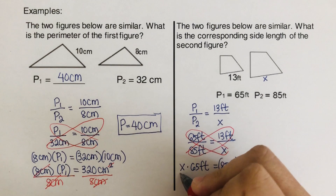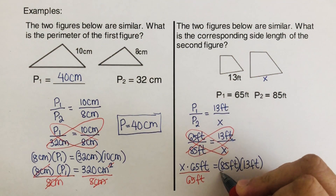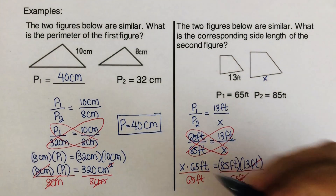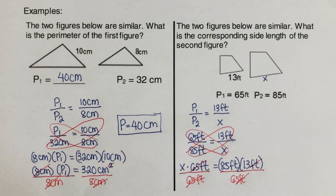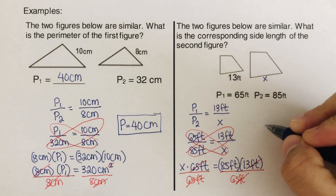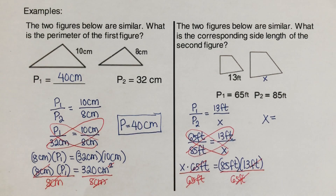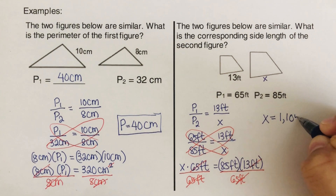Cross-multiplying gives us x times 65 feet equals 85 feet times 13 feet. We divide both sides by 65 feet to isolate x. The 65 feet cancel, and the feet units cancel as well. So x equals 85 times 13 divided by 65. Multiplying 85 times 13 gives 1,105 feet, divided by 65.